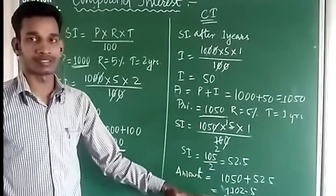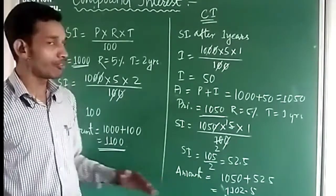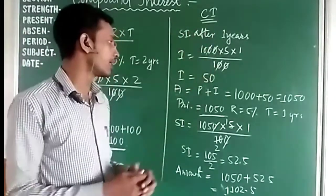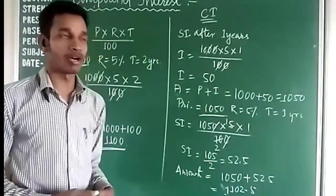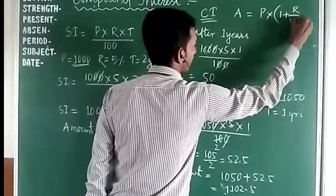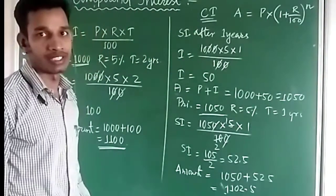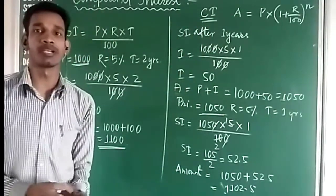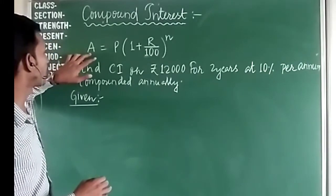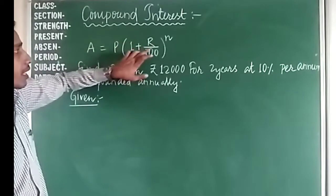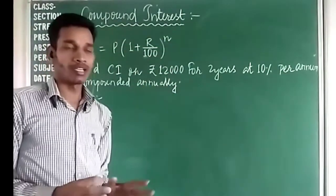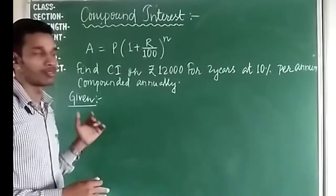Now, we have a formula to find compound interest directly so we do not need to find the interest year by year. The formula is: Amount = Principal into (1 + R/100) to the power N, where P is the principal, A is the amount, R is the rate of interest, and N is the number of years.